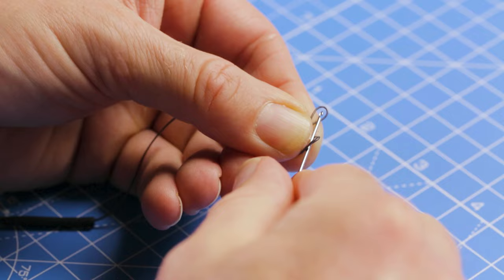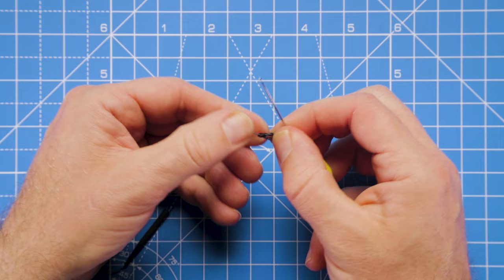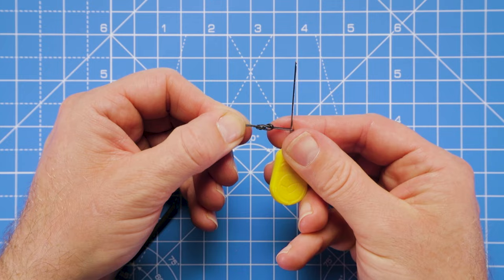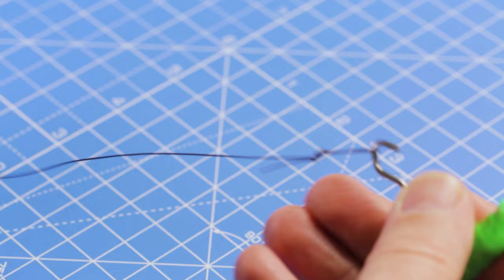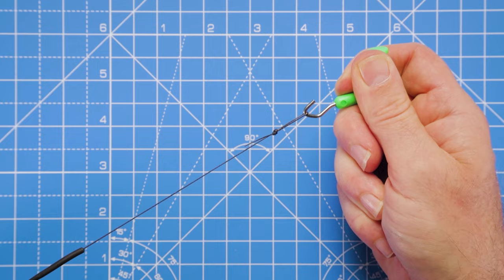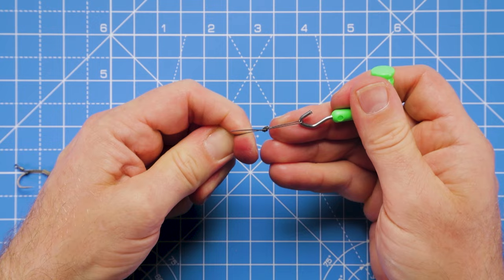Just take your time at this point. There we go, we've created our figure-of-eight loop knot. I've just licked my fingers there just to add some moisture to that knot before I pull it down nice and tight with the pulley tool. There we go, just pull that knot down. It can be a bit fiddly that knot, but it is really strong.